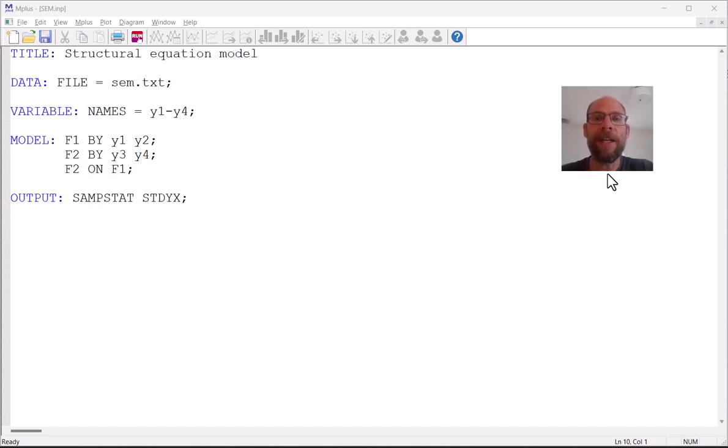In this video I'm going to focus on the Mplus output. You can see that this is a simple structural equation model where I have two factors f1 and f2. Each factor has two indicators. The indicators are observed variables y1 and y2 measure factor f1 and y3 and y4 are indicators of the factor f2, and then the factor f2 is regressed on the factor f1.